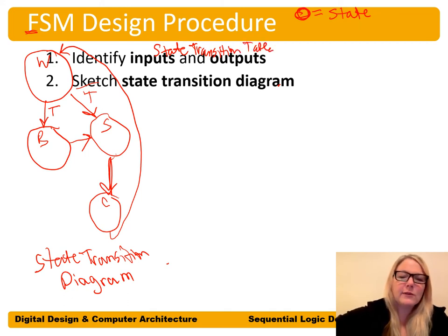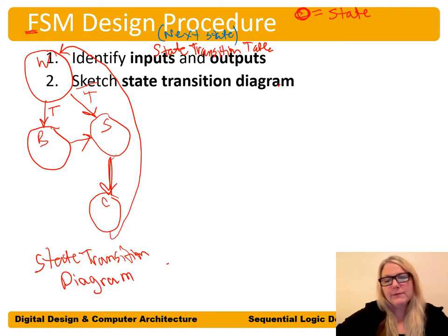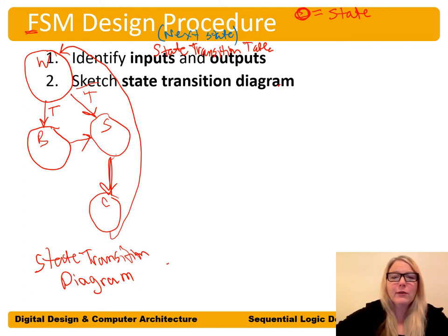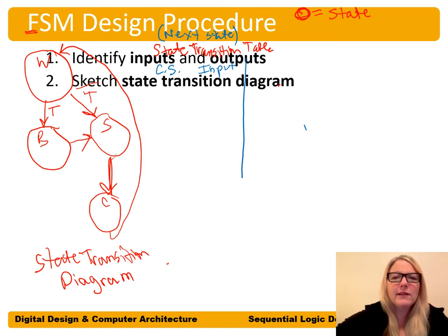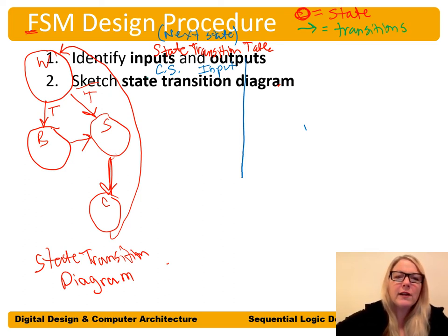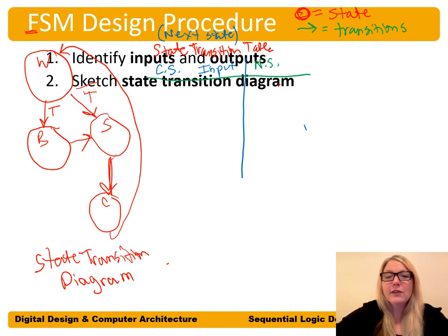We have the state transition table — also called the next state table — and we want to take this state transition diagram and turn it into a table. We put our current states on the left and our input on the right. In this case we have one input: the time input T. These arrows with labels are our transitions between states. We use the current state and input to determine the next state.